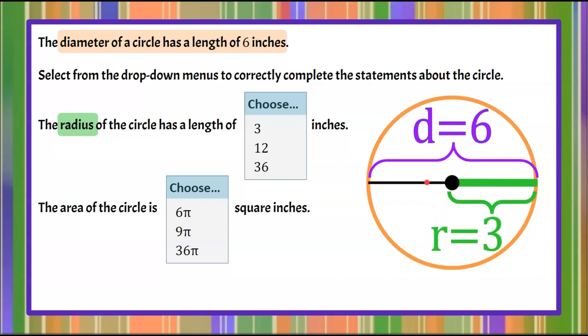So if you put two radii together, you get the diameter. Radius, radius, diameter. Diameter is from edge to edge. Radius is from center to edge. So the radius is half of the diameter, or you can say the diameter is twice the radius.